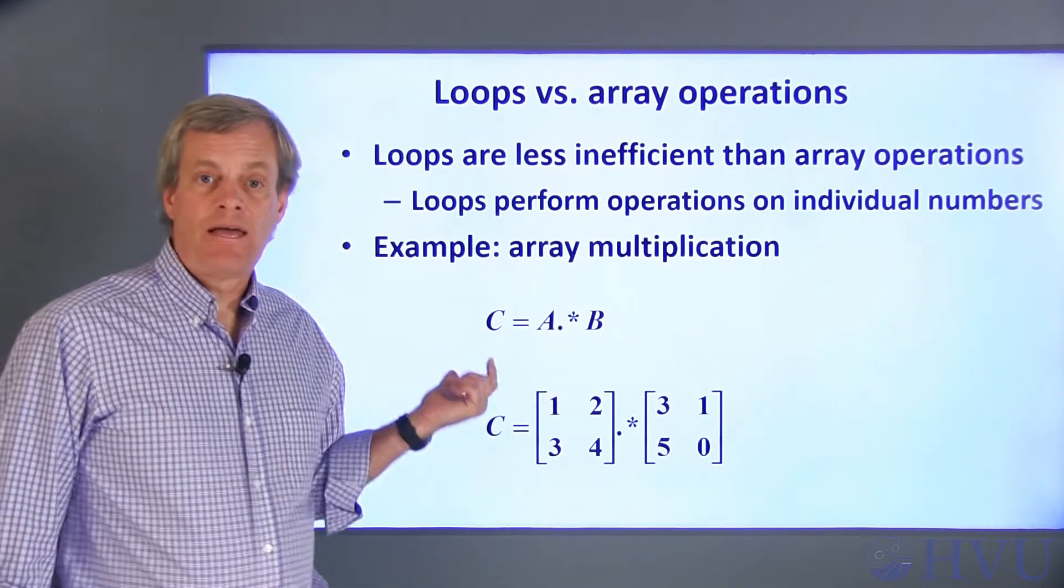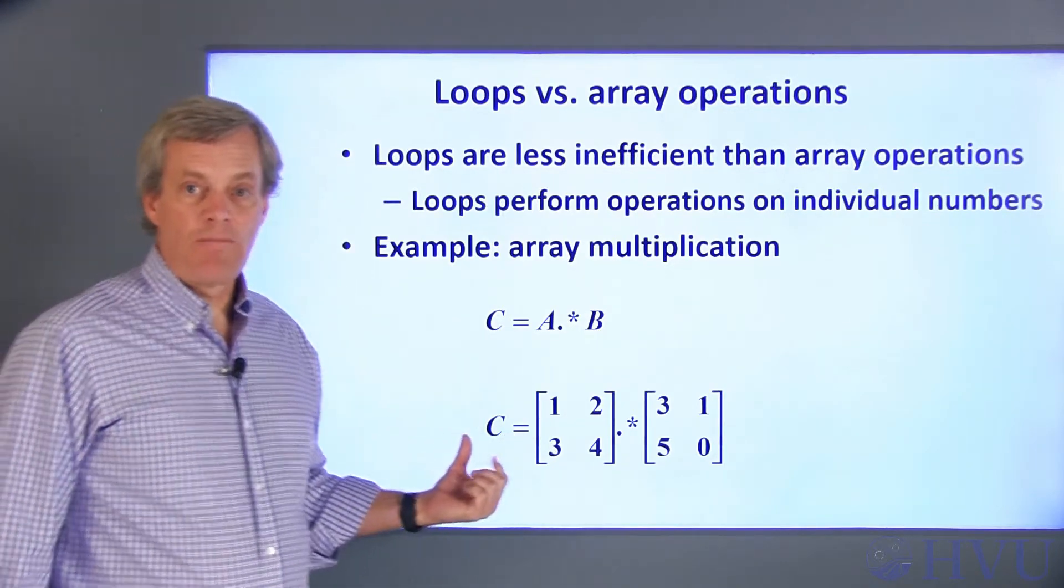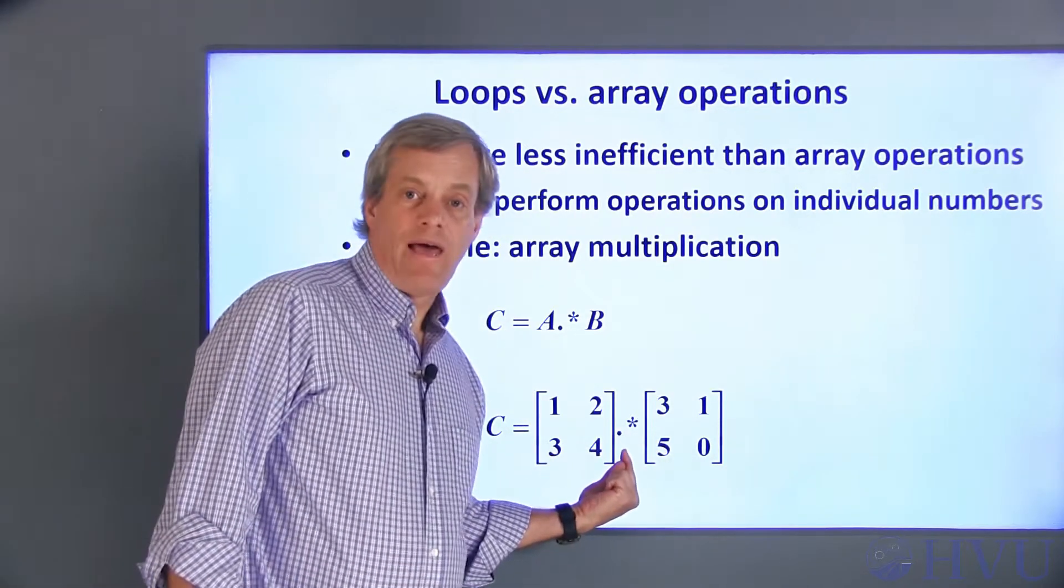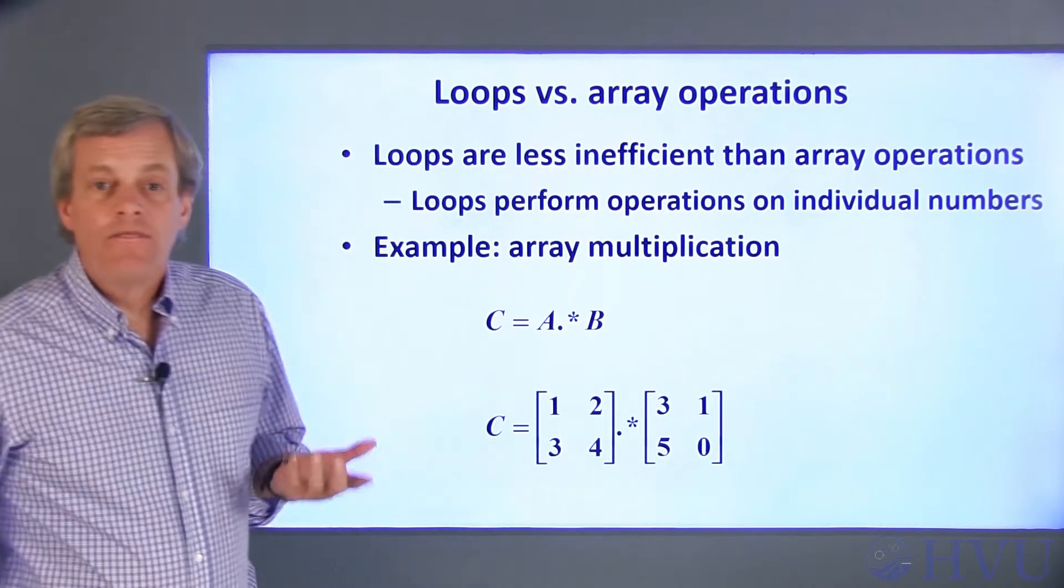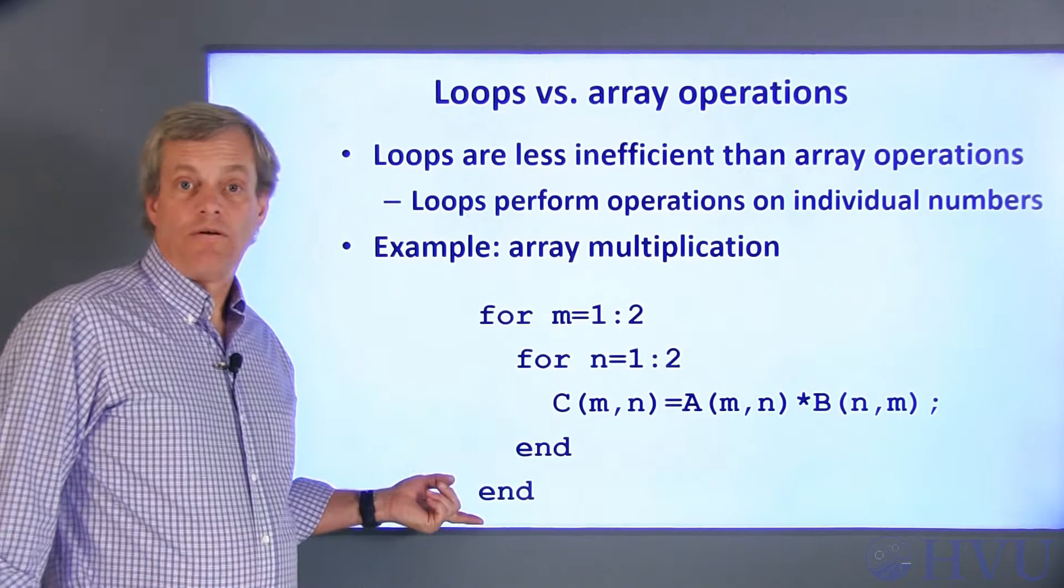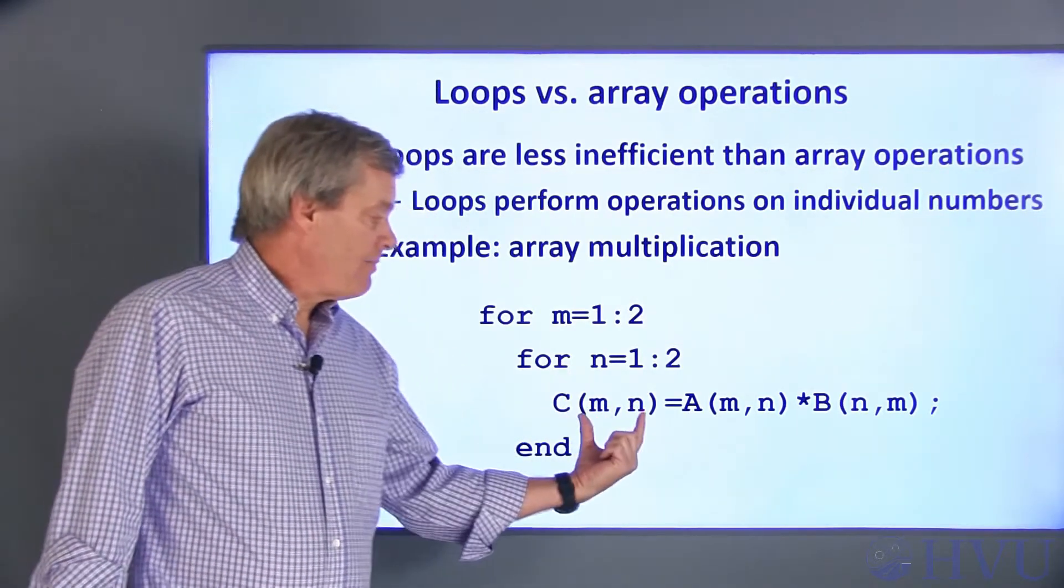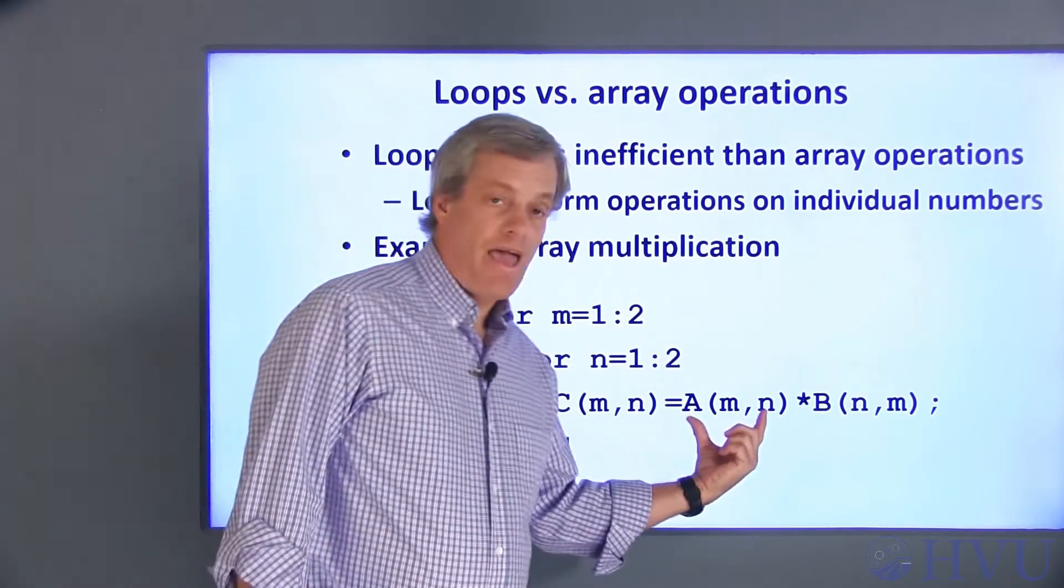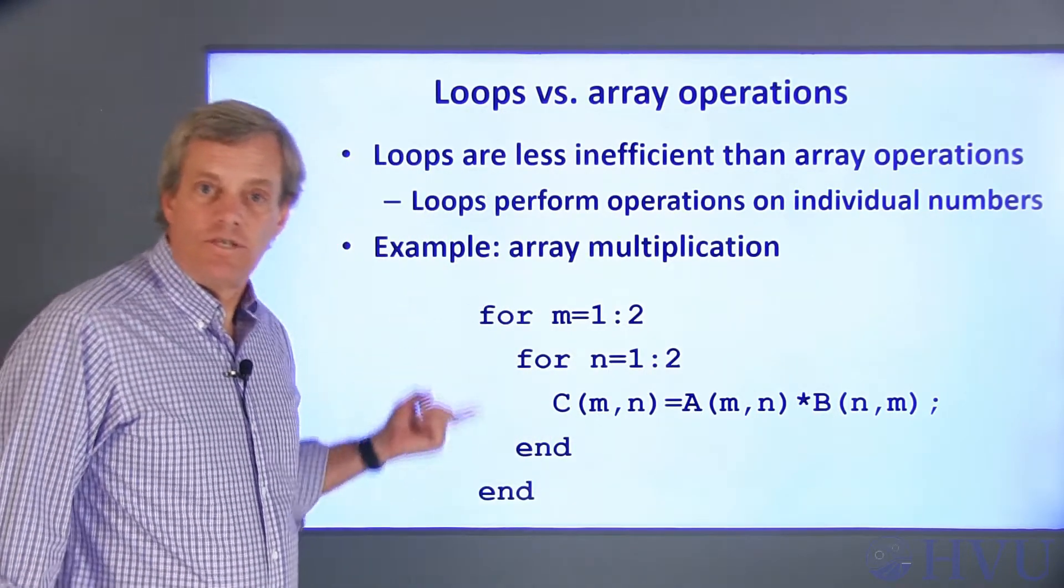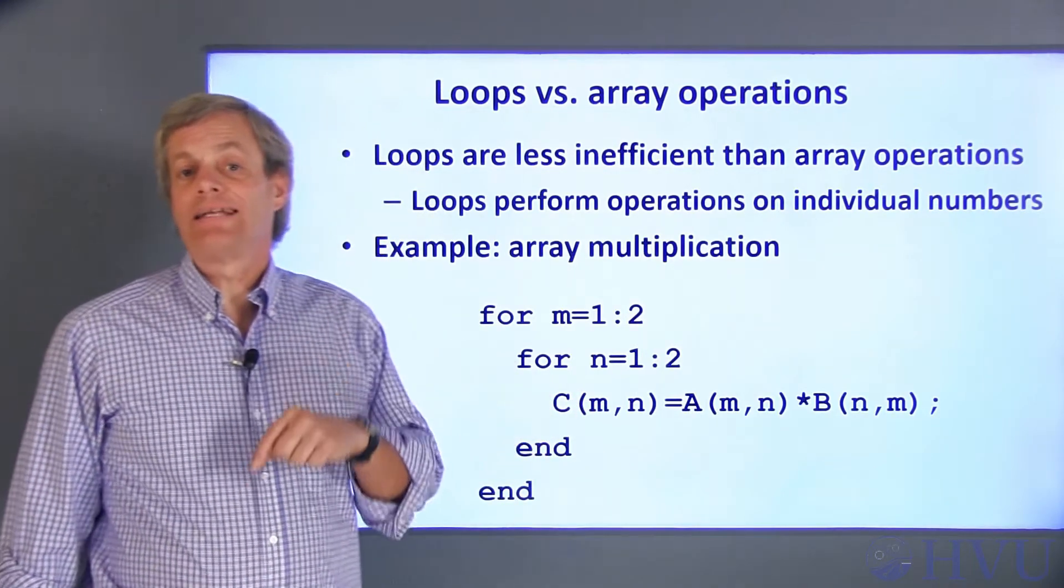For example, consider the element-by-element multiplication of two arrays. Suppose I want to create an array C that's the array product of the matrices A and B. I can simply and efficiently use MATLAB's dot times operator. This process could be implemented as a set of nested for loops, as shown here. For any combination of N and M, C is the product of the elements of A and B at that location. The nested loops just create every possible combination of M and N. The elements in C are created one at a time.